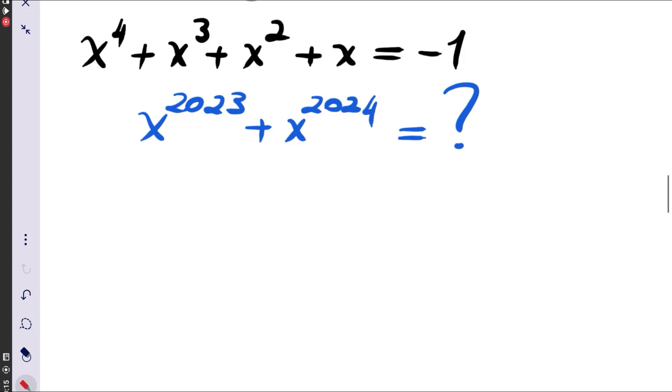It says x to the power 4 plus x cubed plus x squared plus x is equal to minus 1. We need to simplify the expression x to the 2023 and x to the power 2024. We want to find the simplest expression of this one.